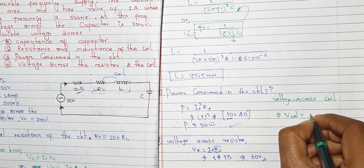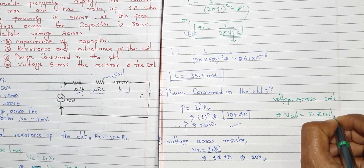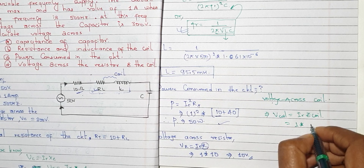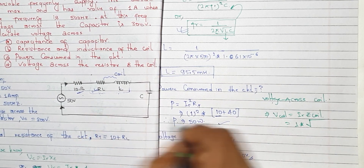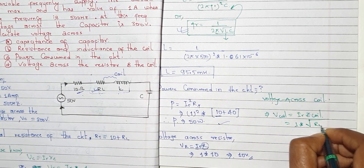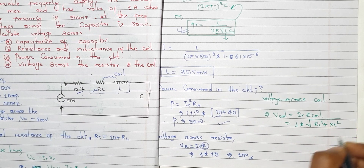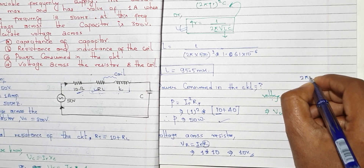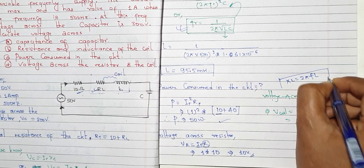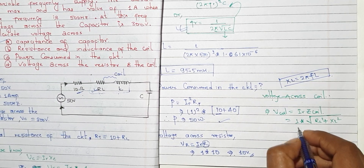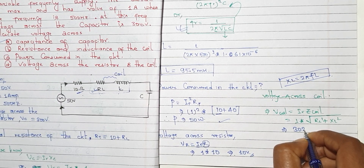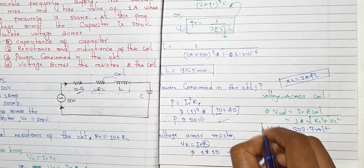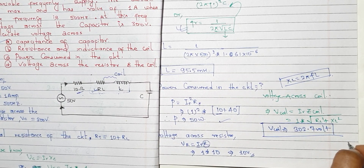Voltage is equal to I times R. For the coil, the voltage across the coil is I times the square root of R_L squared plus X_L squared, where X_L equals 2πfL.